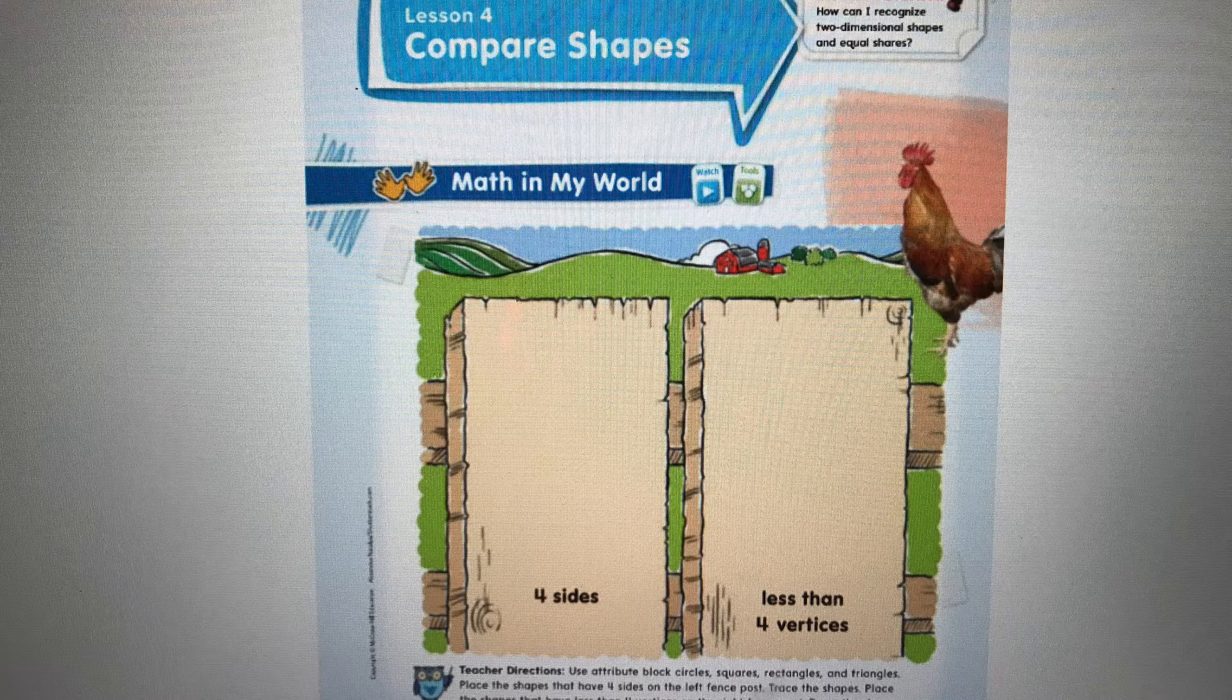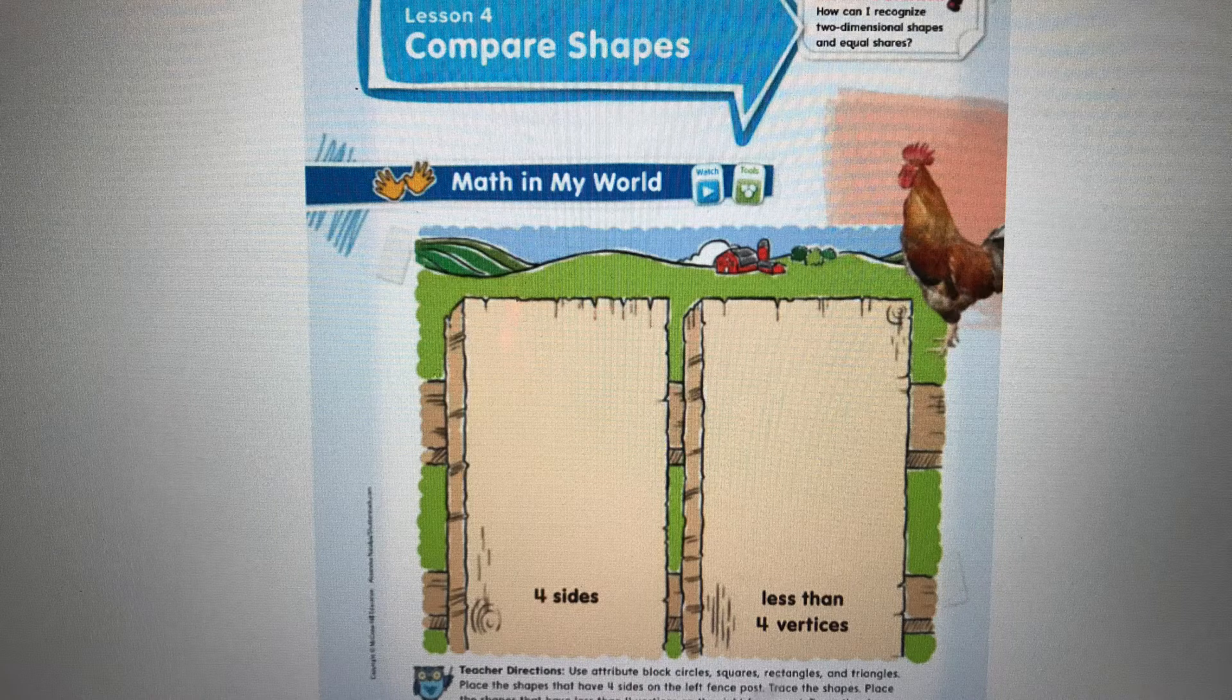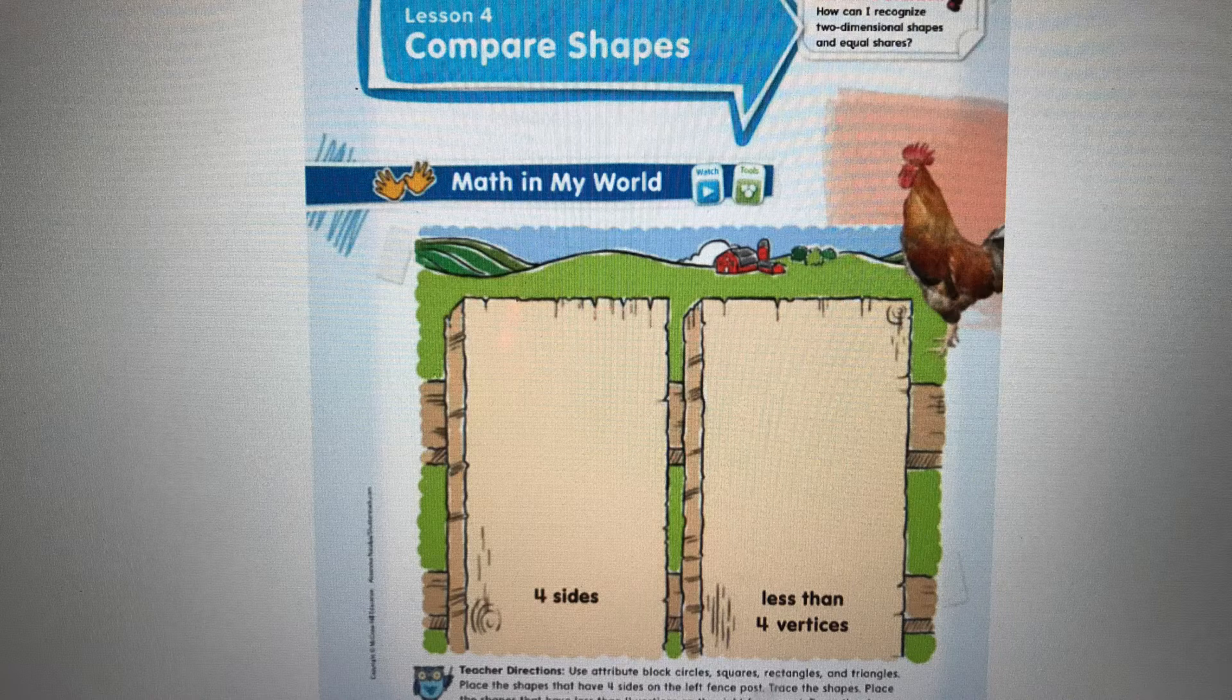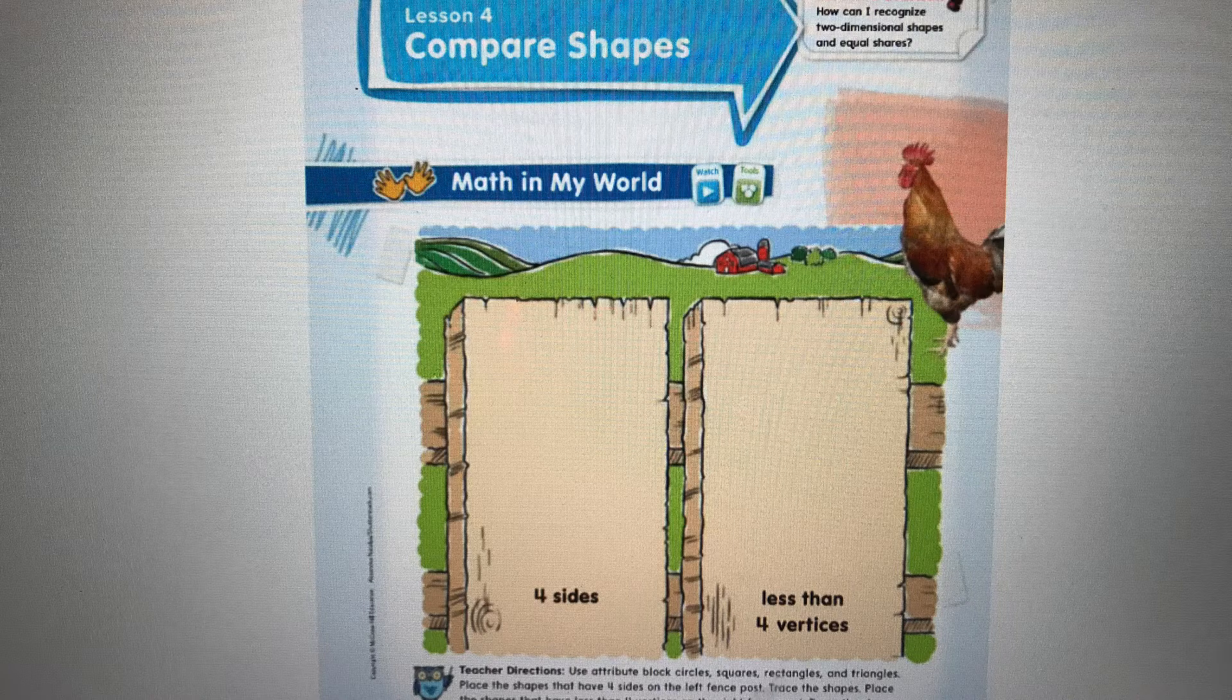Okay, boys and girls, now we're going to go on to lesson four, and we're going to compare shapes. So thinking about all the shapes that we've learned this week, shapes have sides and vertices unless it's a circle. Since we don't have attribute blocks at home, what I want you to do is use your pencil to draw different shapes. On the left, you'll draw shapes that have four sides. That would be like the rectangle or the square. And on the right, I want you to draw shapes that have less than four vertices. That means the corners. For example, a triangle has only three vertices, and a circle has zero vertices. So go ahead and think to yourself about our shapes and draw them on your paper.